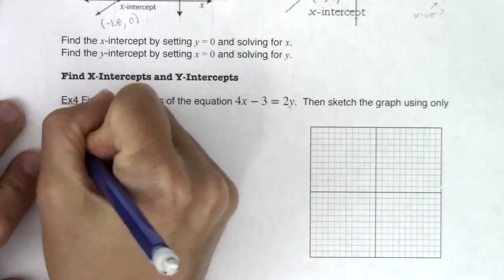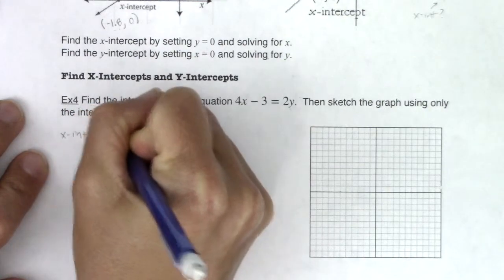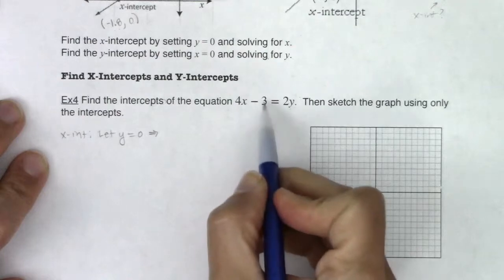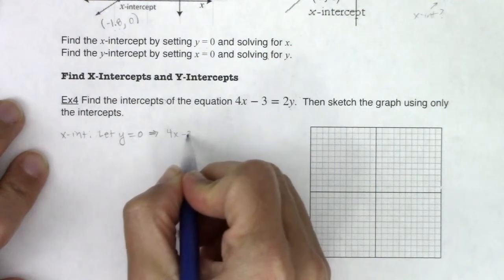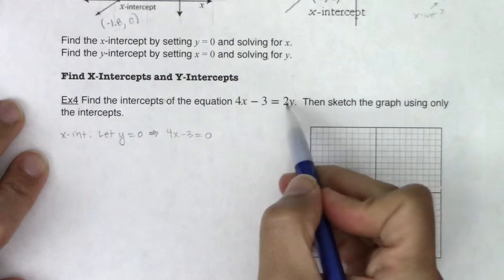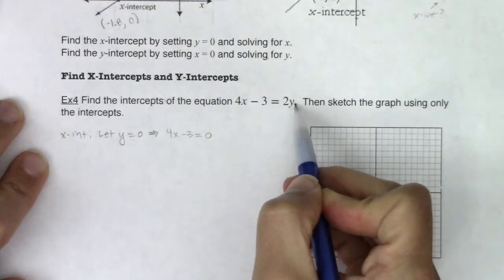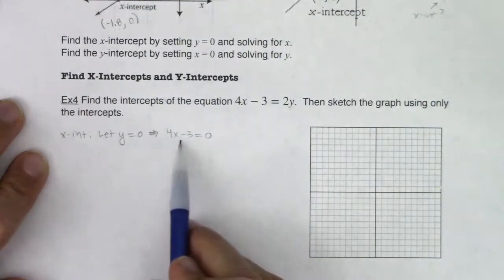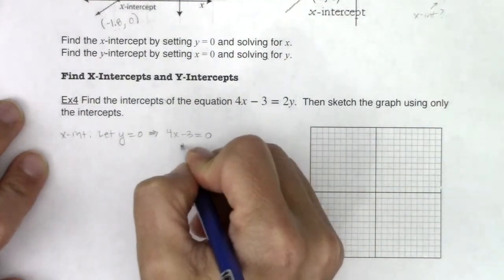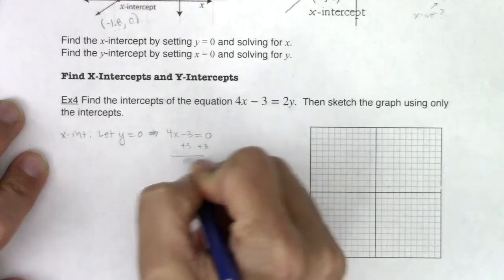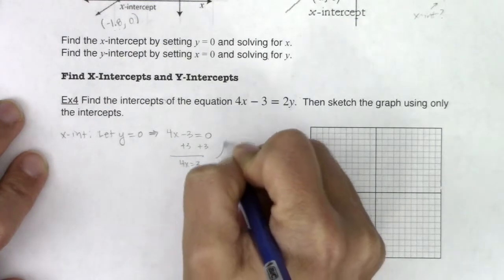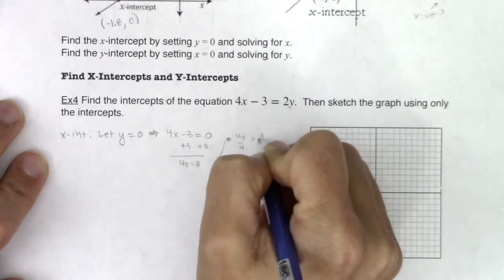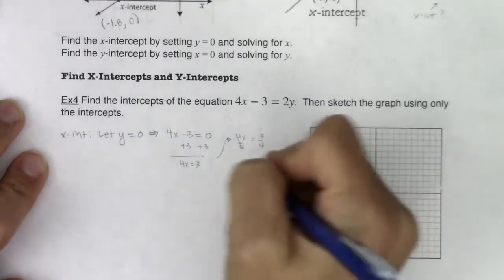So let's find the x-intercept. If I want to find the x-intercept, I'm going to let y equals 0. So if I let y equal 0, my equation then turns into 4x minus 3 equals 0, because 2 times 0 is 0. And if I want to find the x-intercept, I set y to 0 and solve for x. I can solve for x. I can add 3 to both sides and get 4x equaling 3. And then I'm going to divide by 4 and I'm going to get x equaling 3 fourths.